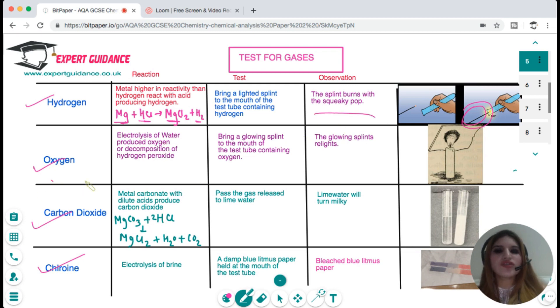For oxygen, oxygen is produced during electrolysis of water or when you decompose hydrogen peroxide. You bring a glowing splint near it and it will relight. So relighting of the glowing splint is a test for oxygen.